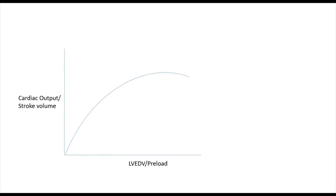The stroke volume is proportional to the contractility of the heart. So what determines this contractility? This leads us to the important concept of the Frank-Starling mechanism. Cardiomyocytes are made up of a series of contractile units known as sarcomeres. The contractility is dependent on the sarcomere length. Conceptually, if there wasn't much volume within the ventricle, there wouldn't be much stretch on the heart muscle, and therefore the sarcomere length would be short. You can think of this as the heart muscle being all bunched up and therefore not being able to contract properly. This would represent the left part of this curve.